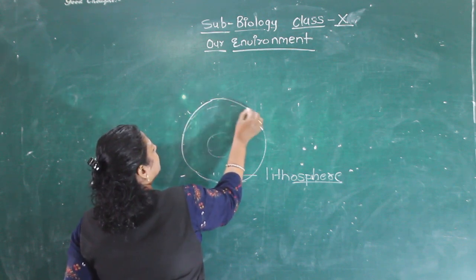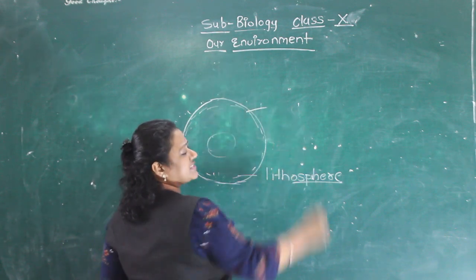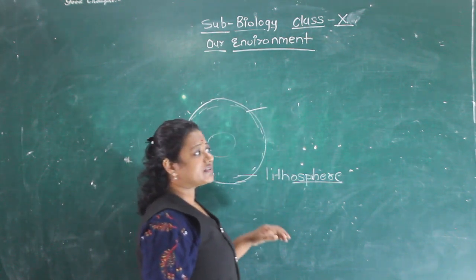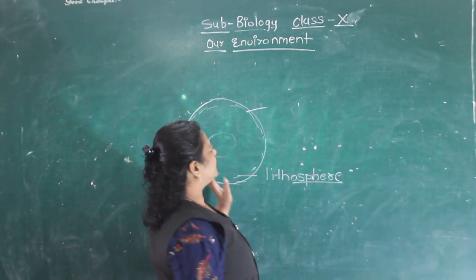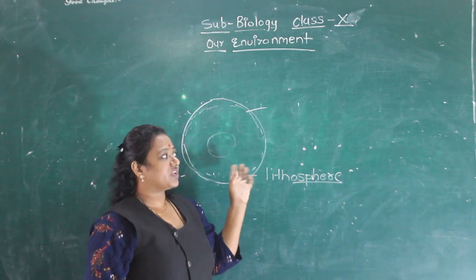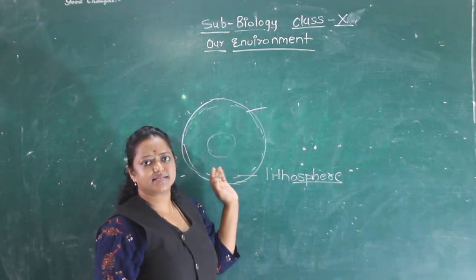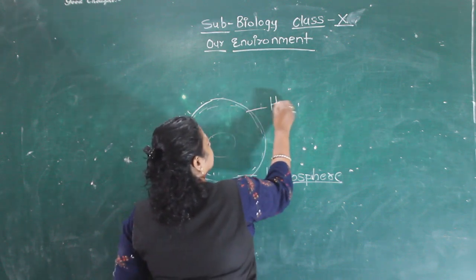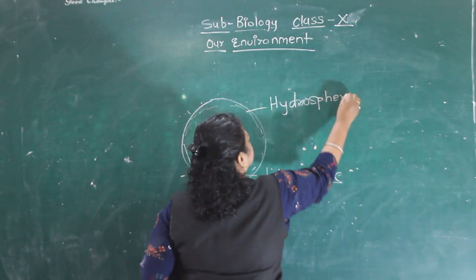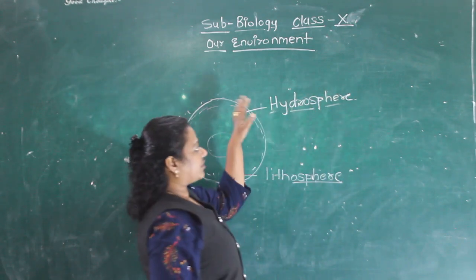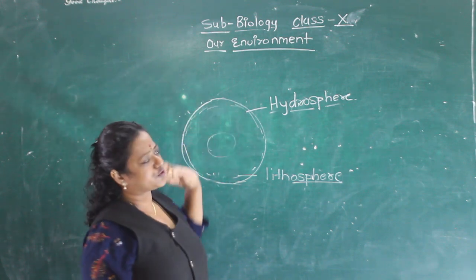The things which are liquid instead — what is liquid on the earth? You can see oceans, rivers, seas — all these water bodies are in the liquid state on the earth. So all these liquid water bodies are called the hydrosphere. Whatever liquid water bodies are present are said to be hydrosphere.